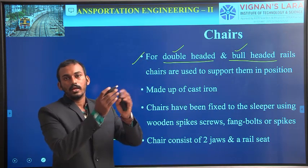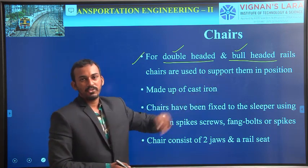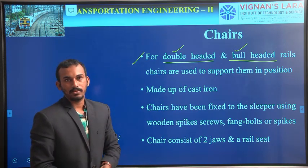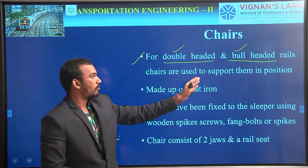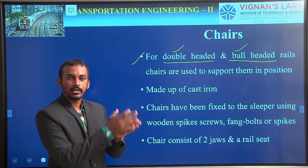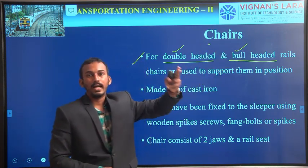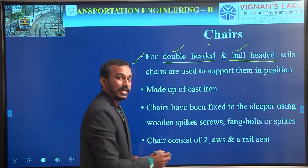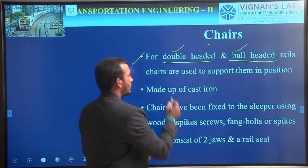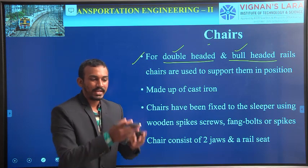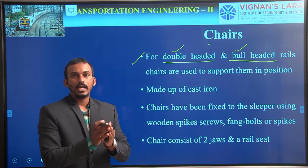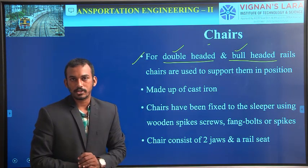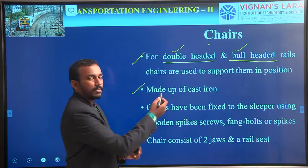By reducing the foot of the rail and increasing the head of the rail, we provide a better surface for the wheels. But these are also outdated. For these two types of rails, we need extra arrangements like chairs and keys — not only chairs but also keys — to connect rails to the sleepers. In order to remove these extra arrangements, we now use flat-footed rails. Why do we use chairs and keys for double-headed and bull-headed rails? Chairs are used to support them in position. If we directly connect them to the sleepers, they may tilt or get loosened. In order to prevent loosening and tilting, we use chairs to keep them in proper position. Chairs are generally made up of cast iron or maybe steel.